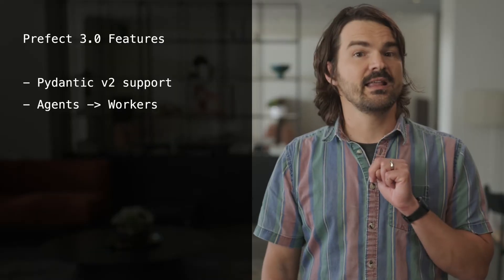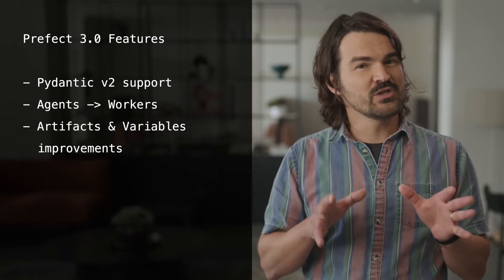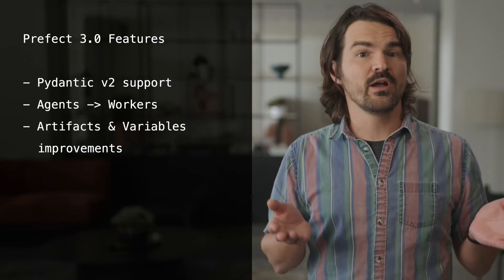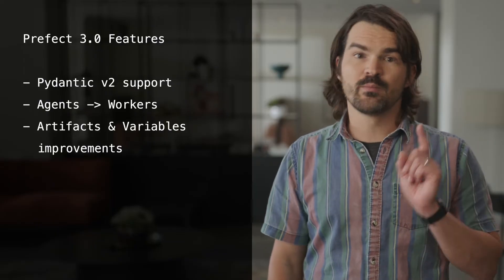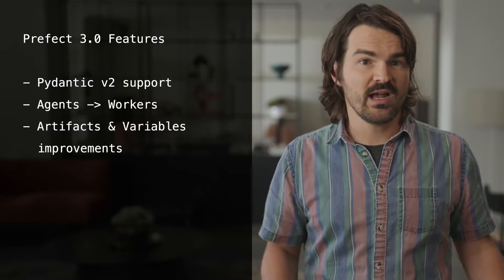Prefect 3.0 introduces several quality of life improvements. The two I'd like to highlight include improvements to artifacts and improvements to variables. Artifacts are visual aids for your flow and task runs, and in 3.0 we've introduced new artifact types including a progress bar artifact for tracking progress within a task, and a new image artifact for charts and graphs. Variables, in contrast, are machine-consumed pieces of data that allow users to store and retrieve arbitrary configuration within a workspace. In 3.0, we've expanded variables to allow for storing arbitrary JSON, not just basic strings.